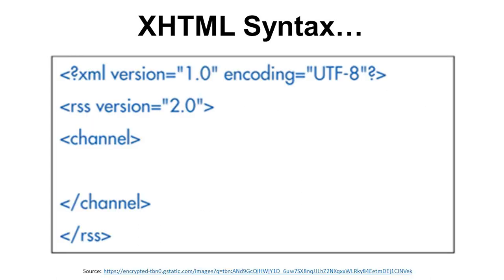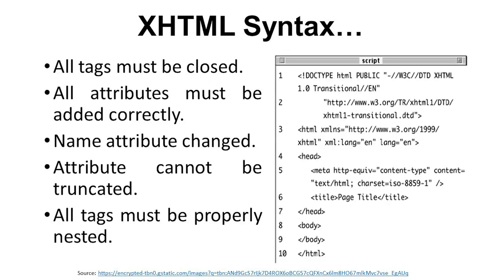Here is the syntax: XML version 1.0, encoding is UTF-8, then RSS version is 2.0, then channel, then channel is closed, then RSS is closed. The XHTML syntax rules are: all tags must be closed, and all attributes must be added correctly.